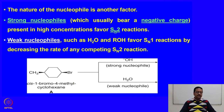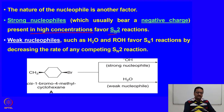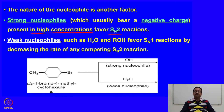The second factor is the nature of the nucleophile. A strong nucleophile, usually bearing a negative charge and present in high concentration, favors SN2 reaction. A weak nucleophile such as water or alcohol favors SN1 reaction by decreasing the rate of any competing SN2 reaction.